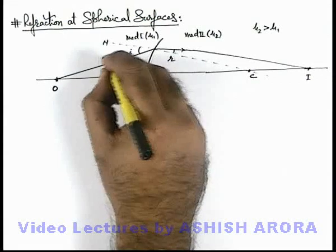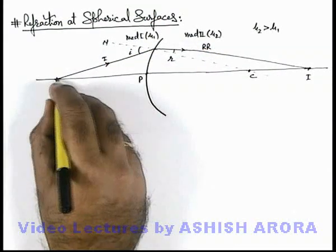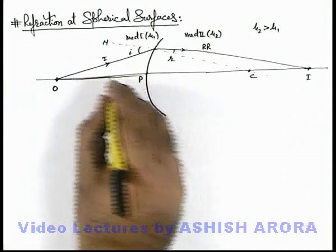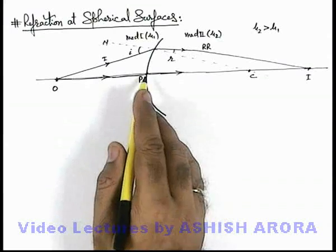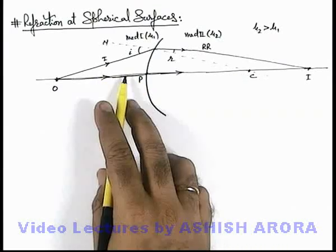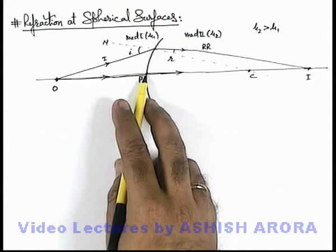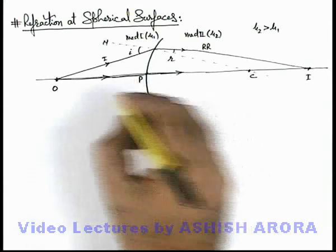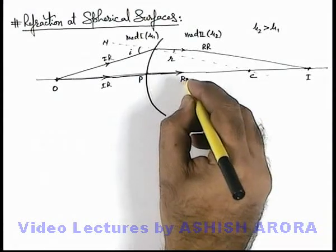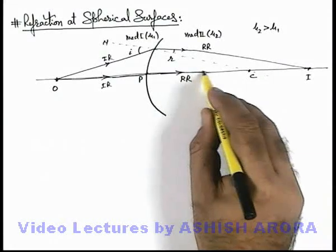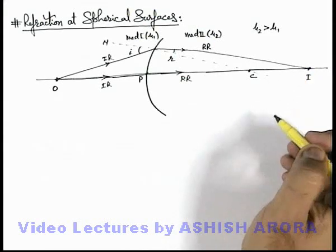Because this is the incident ray and this is the refracted ray. A light ray which travels along the optic axis will pass through as it is, because the optic axis is also the normal at the point we consider as the pole of this boundary. So this is also an incident ray, and this will be the corresponding refracted ray. Wherever the two refracted rays meet, an image will be produced.